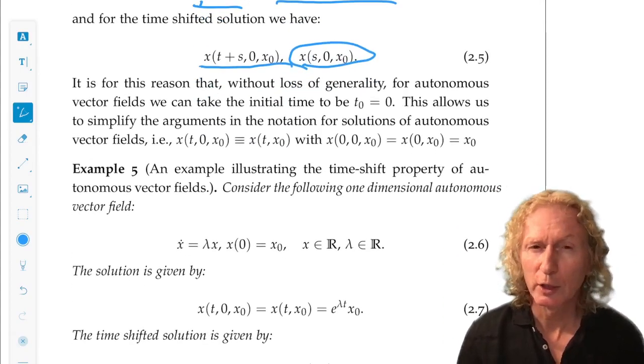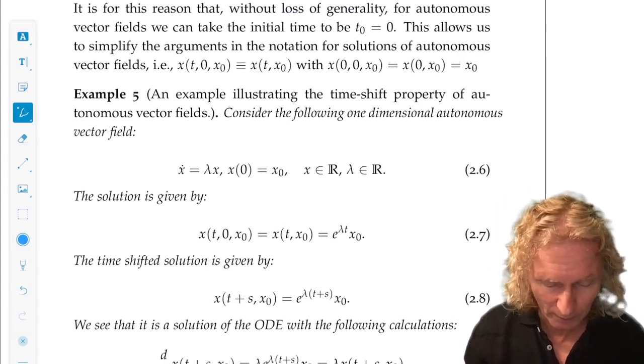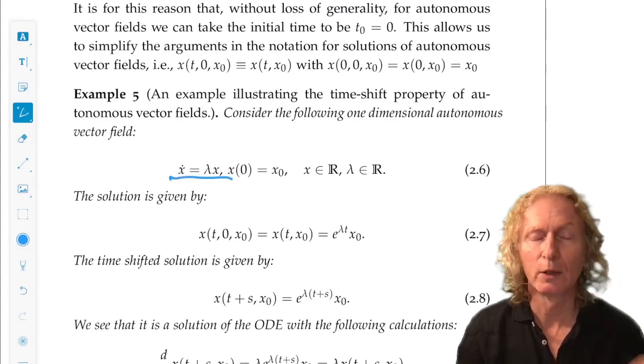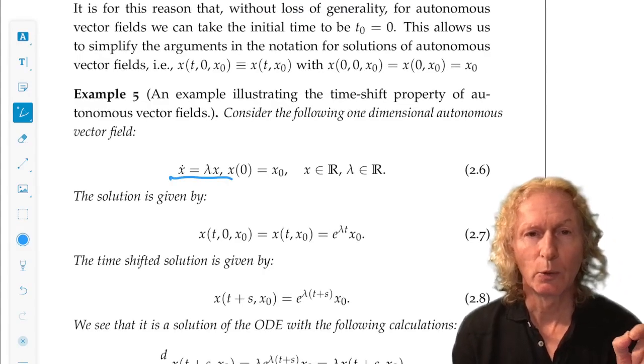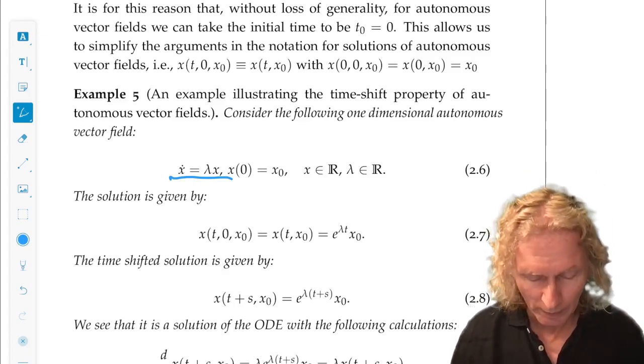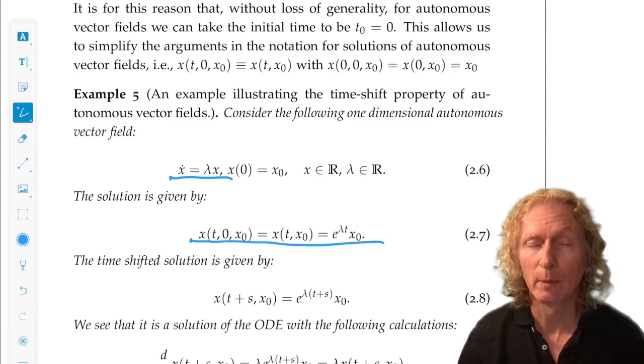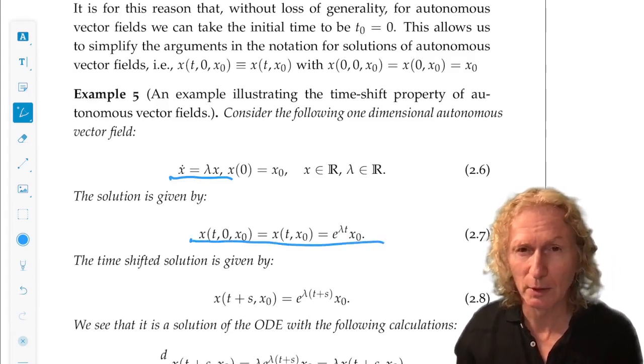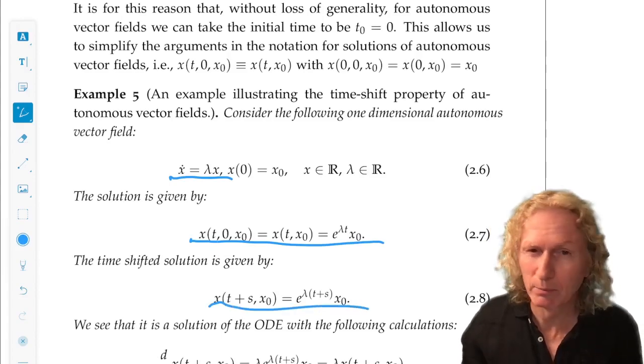So, if we want to check this out in a particular example, and I encourage you to always do this, let's look at the linear one-dimensional equation: x dot equals lambda x with x at 0 equal x_0. We know how to solve this. x of t comma x_0 is e to the lambda t times x_0.